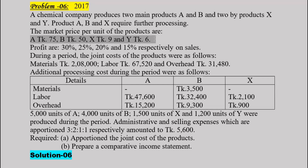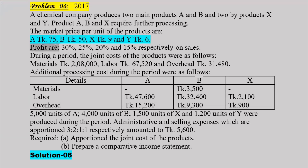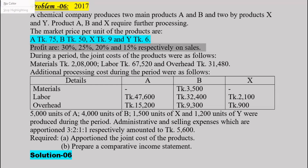The profit on sales for the products are 30, 25, 20, and 15 respectively — representing the profit percentages on sales for products A, B, X, and Y.